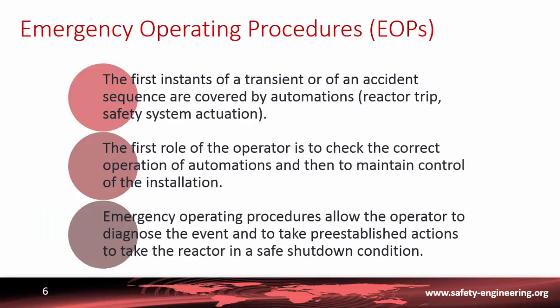The third important element of the operating rules is the Emergency Operating Procedures, or EOPs. The initial response to a transient or accident sequence is covered by automatic actions — reactor scram or reactor trip and safety system actuation. The first role of the operator is to check the correct operation of these automatisms and maintain control of the installation. The EOPs allow the operator to diagnose the event and take pre-established actions to bring the reactor to a safe shutdown condition.